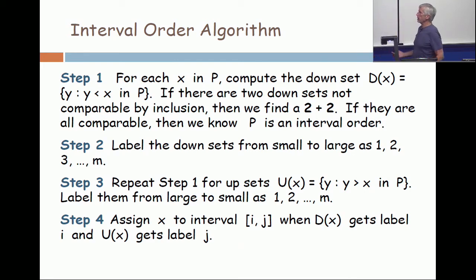Then take the representation. X goes to interval [I, J] when D(x) gets labeled I and U(x) gets labeled J. There's some details in here. Why does this give you an interval? Why is the number of downsets equal to the number of upsets?